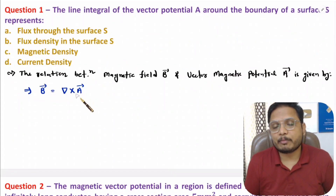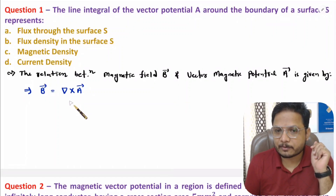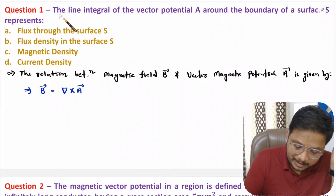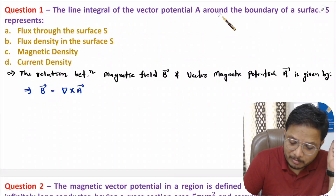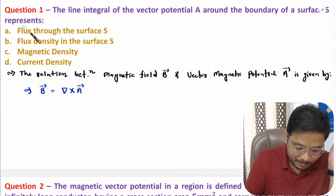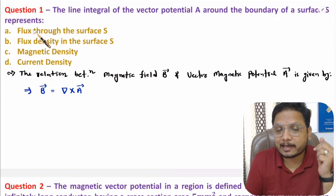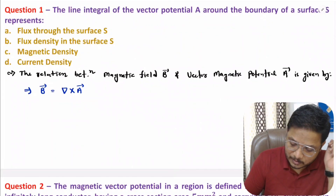Now let us solve the first question. In the first question, the line integral of vector magnetic potential A around the boundary of surface S represents what. So we need to identify what is the line integral of vector magnetic potential.